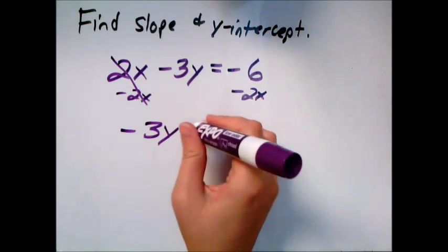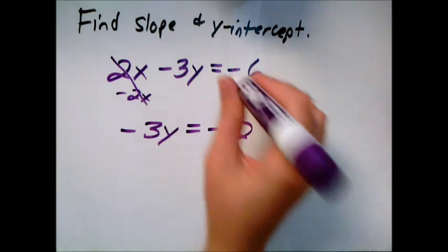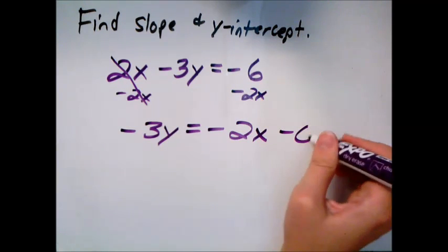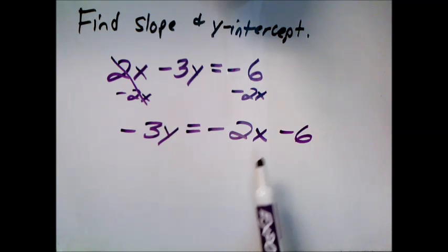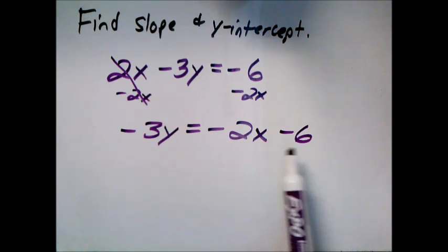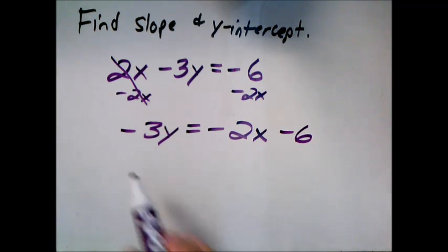So let's subtract 2x from both sides. You can put negative 6 minus, as long as you have the right signs. It doesn't matter which one goes first, but I like putting the x first because mx plus b, that term is normally first.